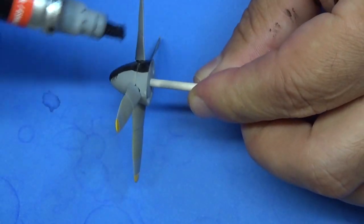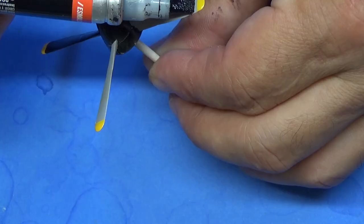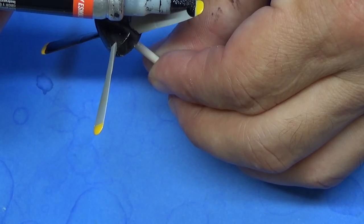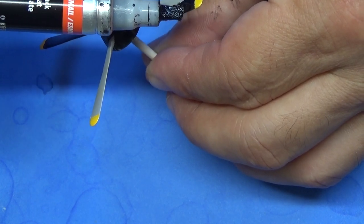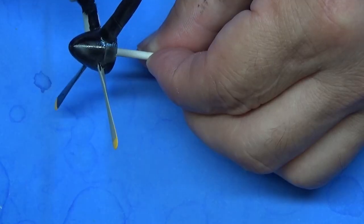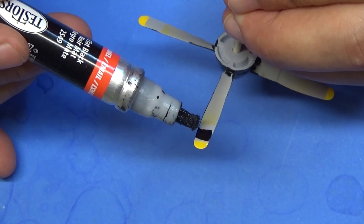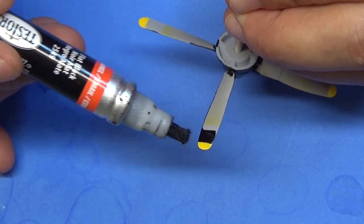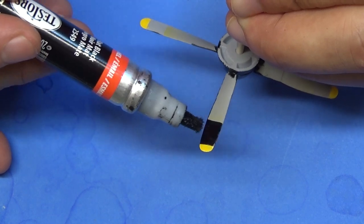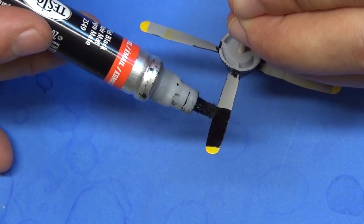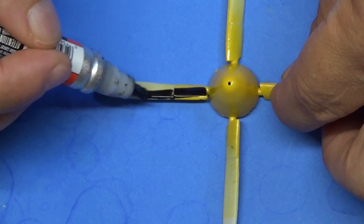So we've got our propellers here. This is a Testors paint pen, it's oil-based, it's their enamel paints. Just shake it up and just carefully go over these props with it. This is how I did it. This is for one of the smaller kits, that is the 1/48 Airfix kit. You can kind of tell by the color of it and the way the blade is positioned. We're also going to show you the...